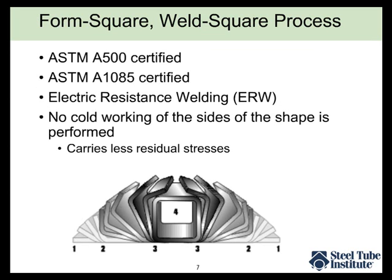In the form square weld square process, the shape is directly formed into a square or rectangular shape and then welded in that rectangular shape. Starting from flat stock, it gets formed through successive steps — steps one through four — directly into the square or rectangle, and then it goes through the electric resistance welding process.